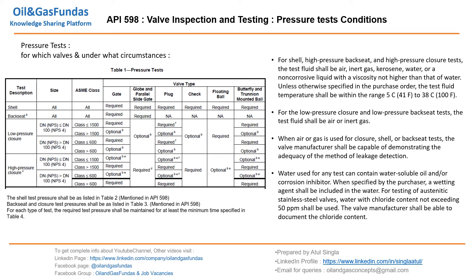Regarding the pressure values to maintain during testing, these are clearly mentioned in table number two and table number three. Table number two covers shell test pressures for all different categories and classifications of valves, giving a clear indication of which pressure to use. Back seat and closure test pressures are mentioned in table number three.